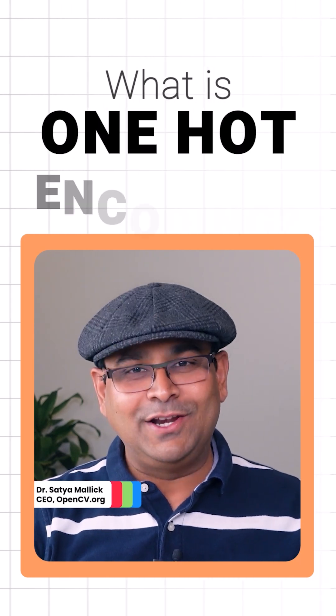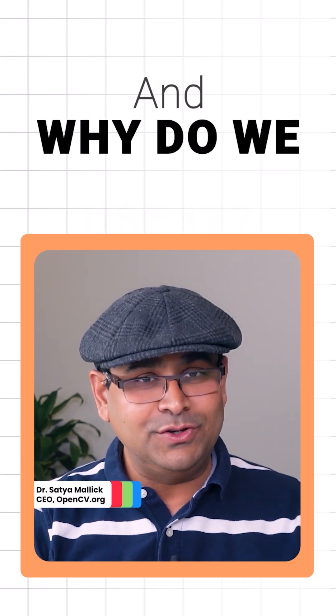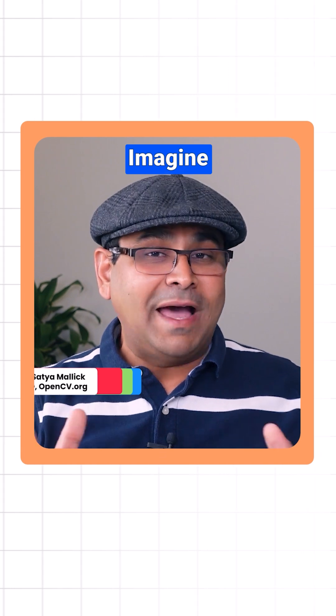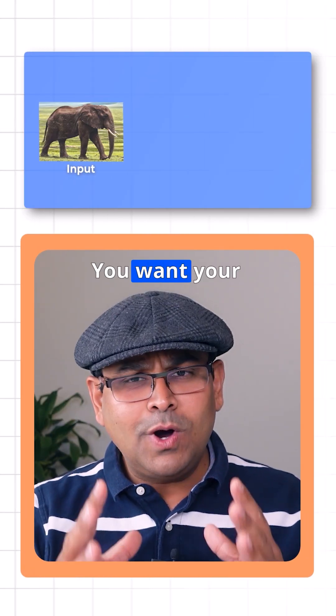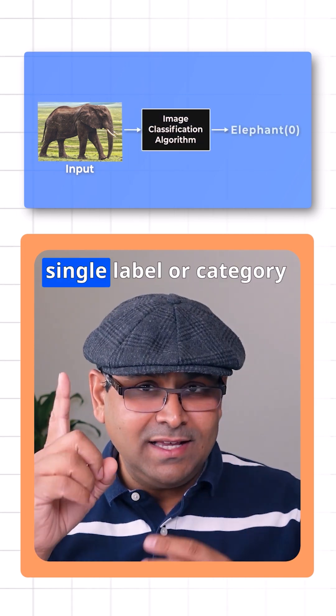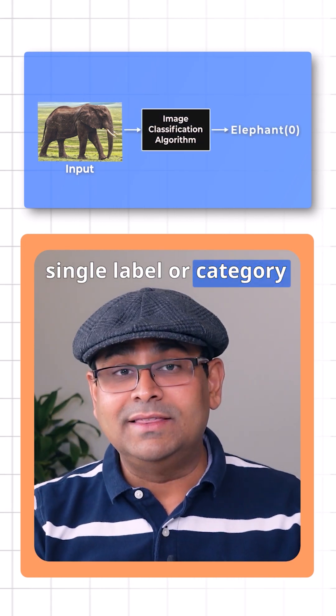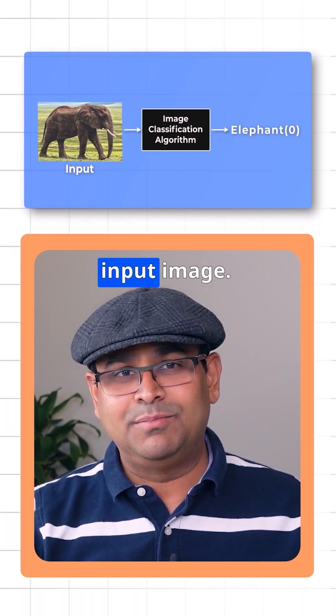What is one-hot encoding and why do we use it? Imagine you want to solve an image classification problem where the input is an image. You want your algorithm to output a single label or category that best describes the input image.